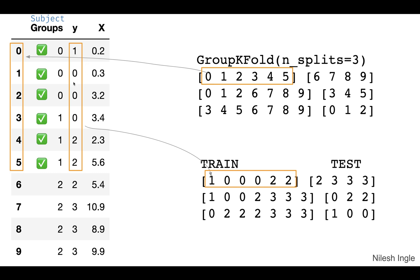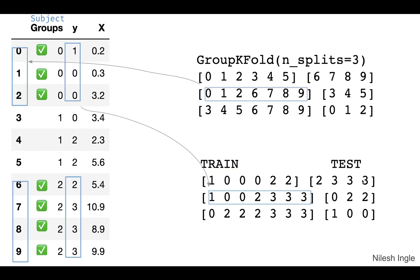All those Y values are assigned to the train set, and the remaining indices — 6 through 9 — are assigned to the test set. In the next iteration, indices 0, 1, 2 and then 6, 7, 8, 9 are assigned to the train set, and the remaining indices 3, 4, 5 are assigned to the test set. That's how the group K-fold works.